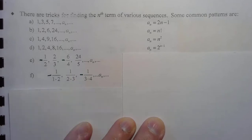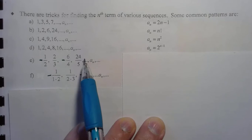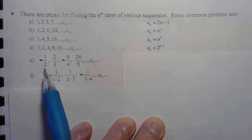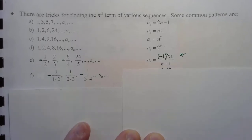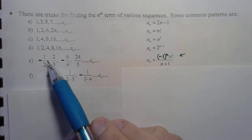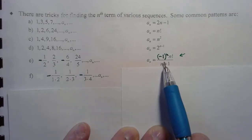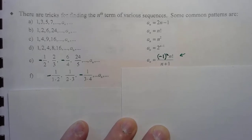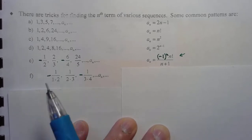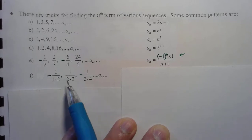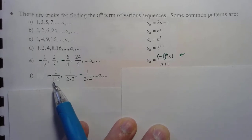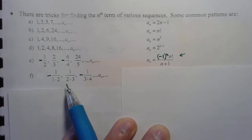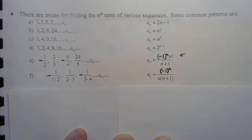Now let's look at this one. I have alternating signs, so my r needs to be negative. My numerator looks like it is factorials, and my denominator looks like n plus 1. Notice that the odd terms are the negative ones, so we took the factor of negative 1 to the n times n factorial. Again, I can see I'm going to have a negative 1 to the n. The bottom looks like n times n plus 1.